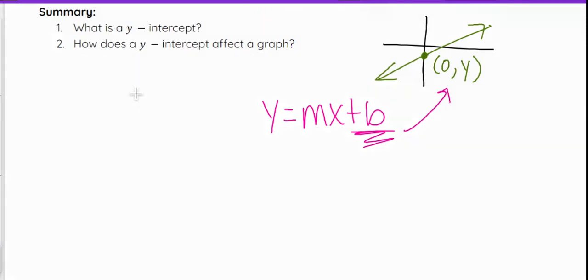And that's how it affects the graph. So if it is a positive b, it will intersect up here. If it's a negative b, it will intersect down here. And if b equals 0, it will intersect right here.